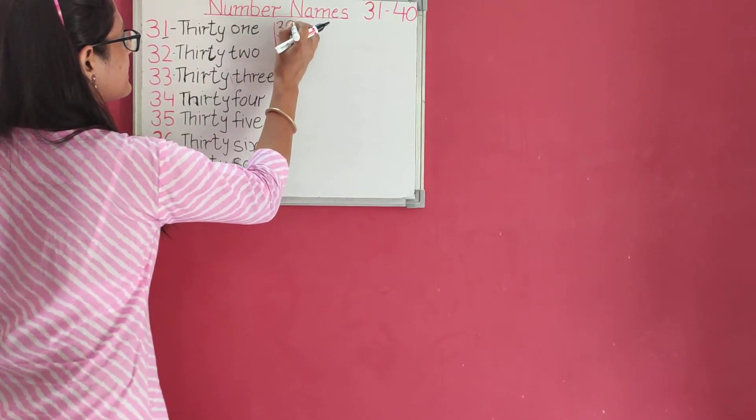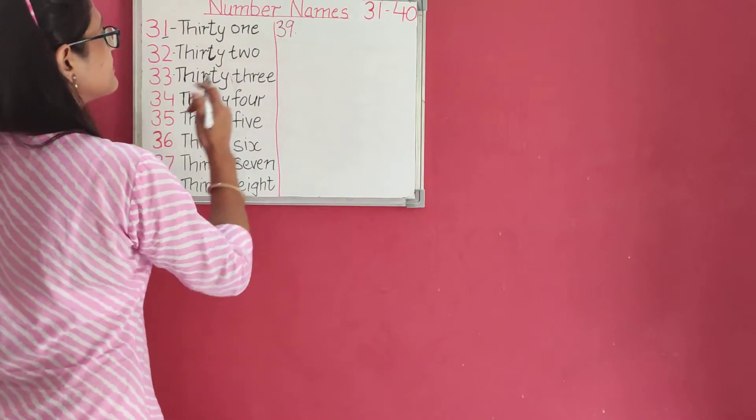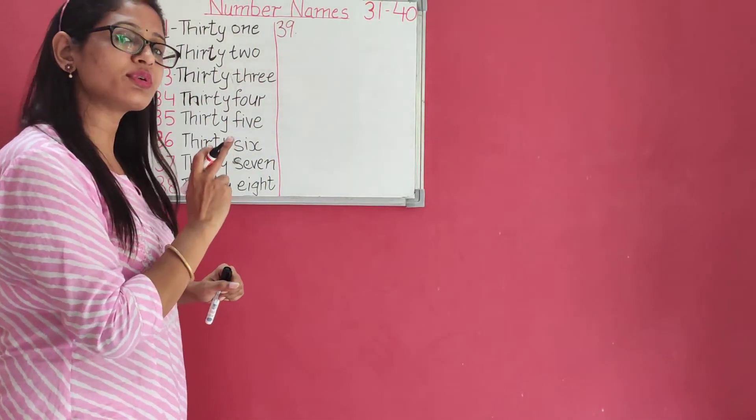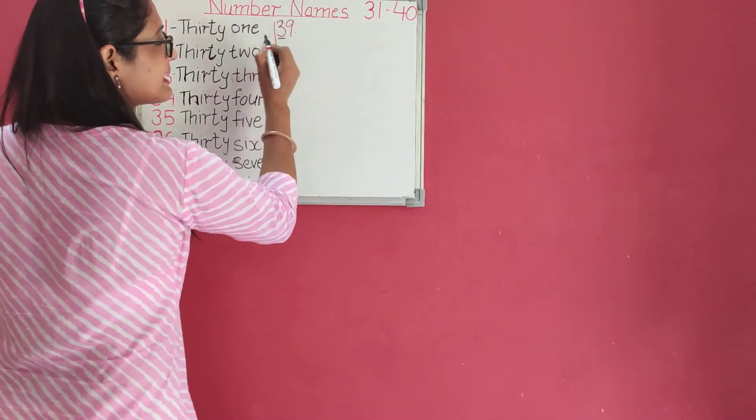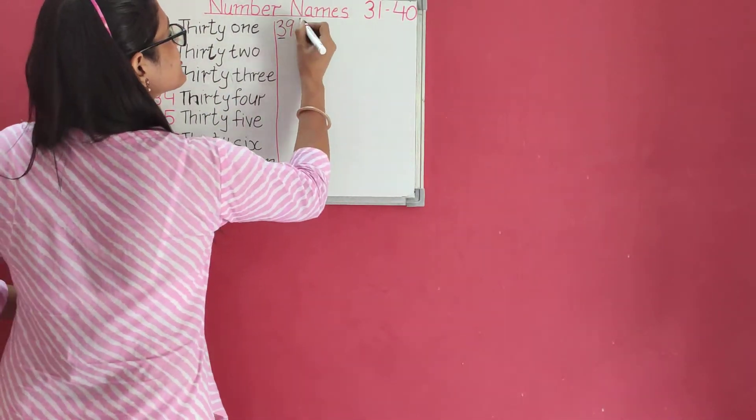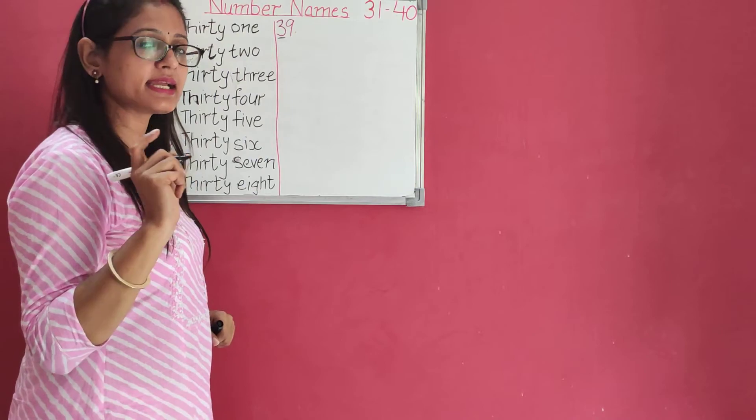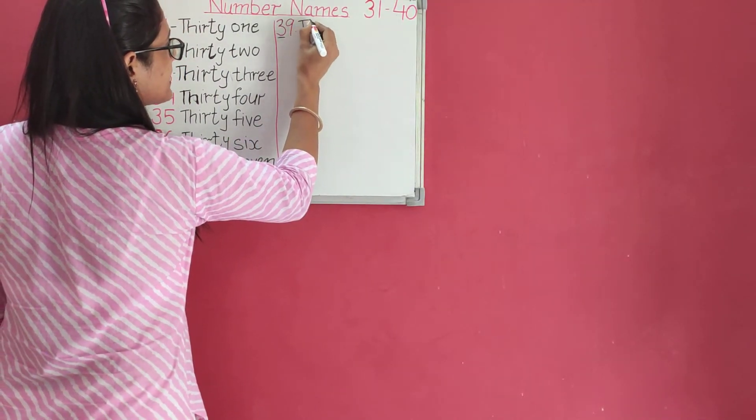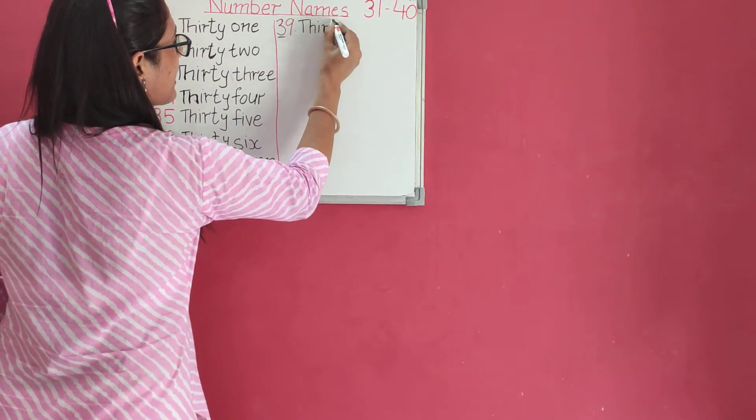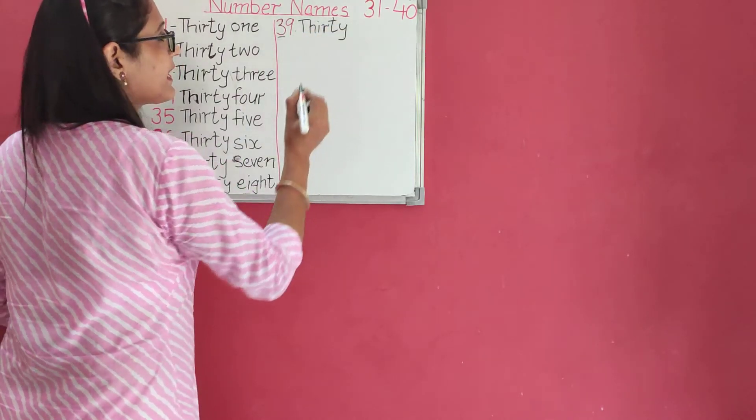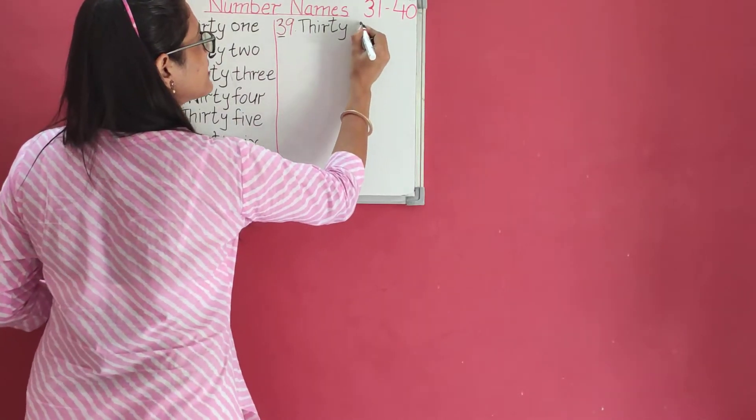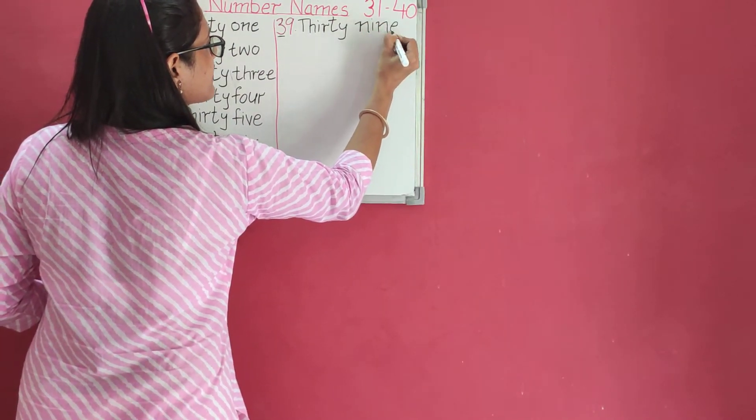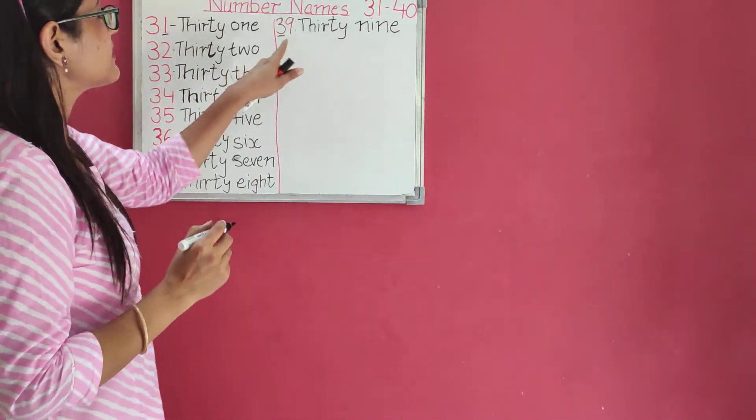Thirty-nine. What will be the number name? Thirty-nine. First, what will you write? Thirty. Because in thirty-nine, we have thirty, isn't it? So, thirty is written first. When we are writing thirty-nine, we should write thirty. So, T-H-I-R-T-Y, thirty, and N-I-N-E, nine. Thirty-nine.